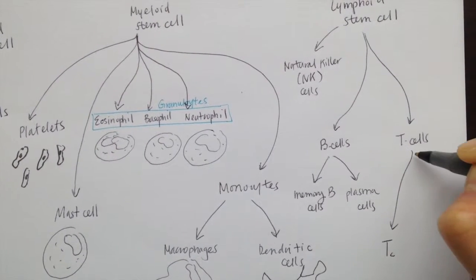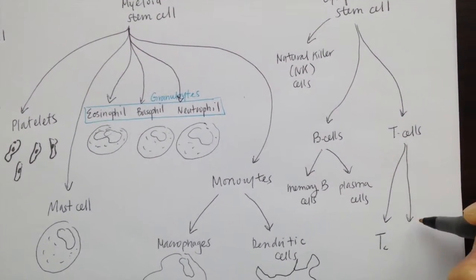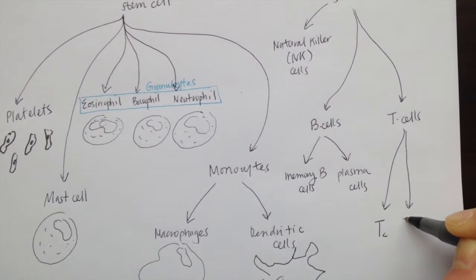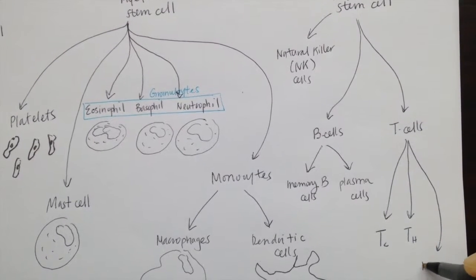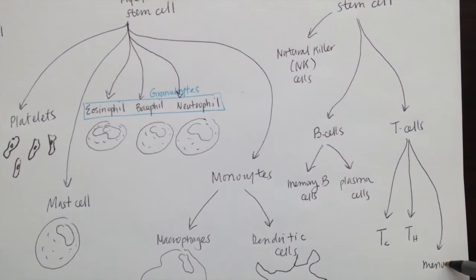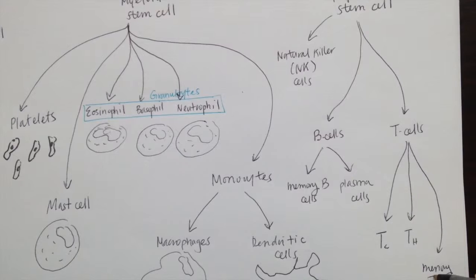The memory cells for both the B cells and T cells will lay low until they are activated upon a second infection with that same original antigen. They will allow the second immune response to be heightened and much more efficient.